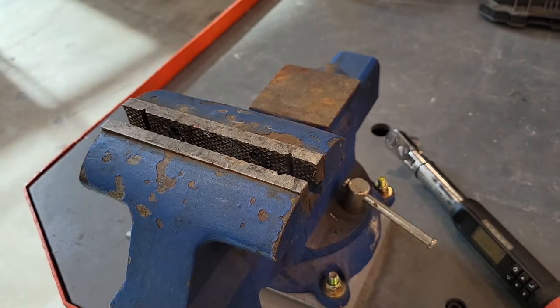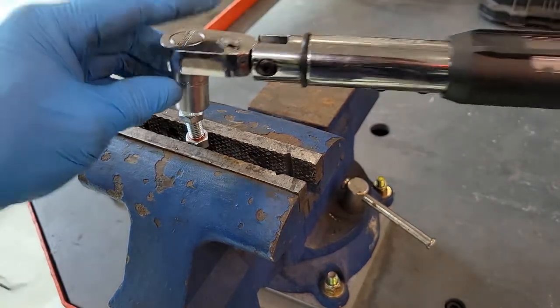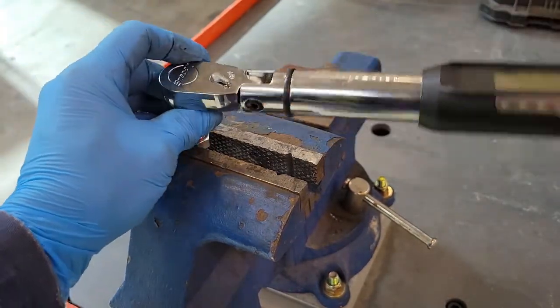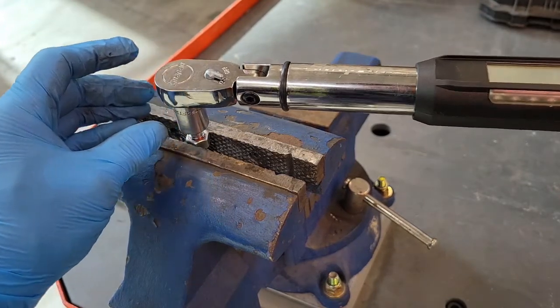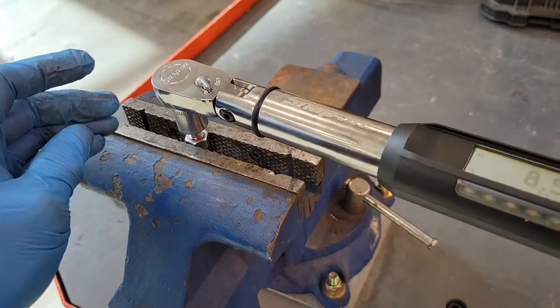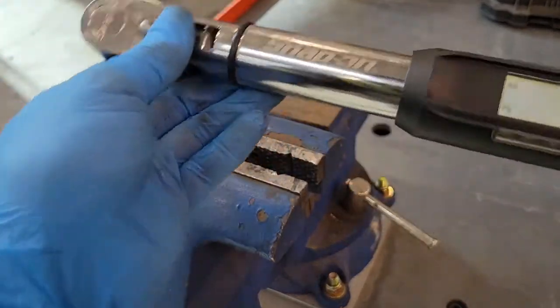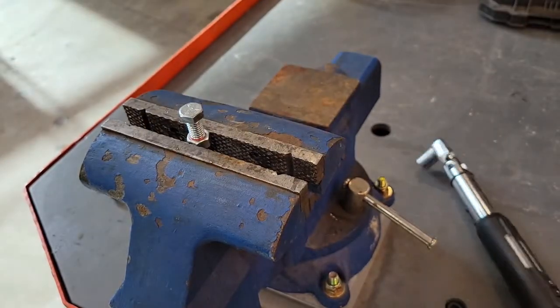So let's try the red thread locker. As you can see, we've got the red thread locker on there. Let's see how much more that takes. Okay, 8.8 foot pounds. Not too bad.